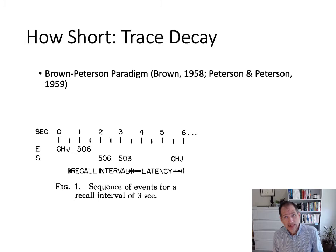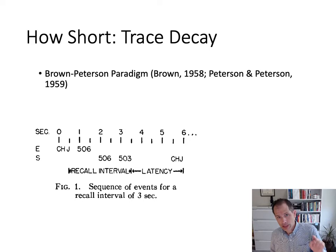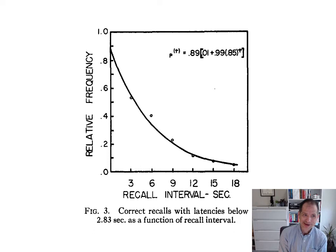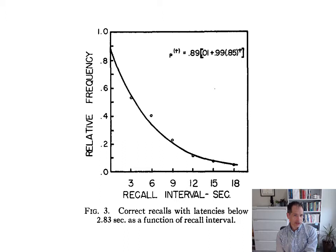It requires some effort to count backwards by threes from a three-digit number. Then a few seconds later you'd be asked to recall the original CHJ. They spaced recall intervals from 3 seconds to 18 seconds to measure how long subjects could retain those letters while simultaneously counting backwards. What they've done is given you a piece of information and then interfered with your ability to rehearse it, to measure how long that information stays if it can't be rehearsed. The answer is not very long. At zero seconds, people are about 90% correct; by three seconds performance drops to about 50%, and by 18 seconds the trace has essentially vanished.